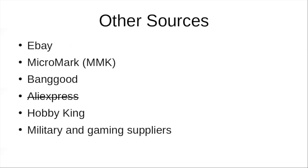Banggood, AliExpress, and Hobby King are Chinese suppliers. I have AliExpress lined out right now because they don't appear to have an avenue to file a complaint against a vendor. eBay does. Hobby King is mostly model airplane stuff, but they're getting more and more railroad stuff. They have some low-cost decoders. The military and gaming suppliers have all kinds of paint. A lot of weathering techniques like pan pastels, we are discovering through the military modelers.